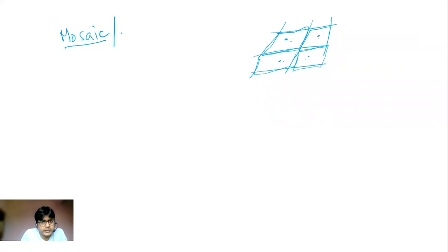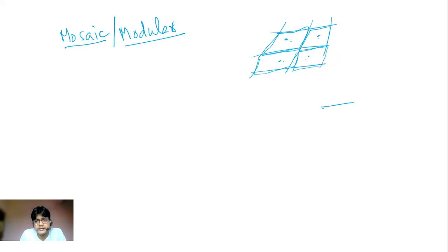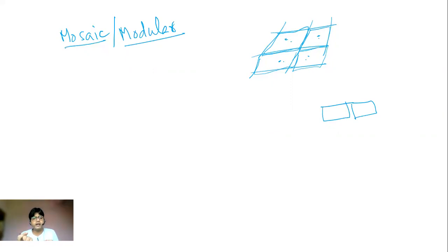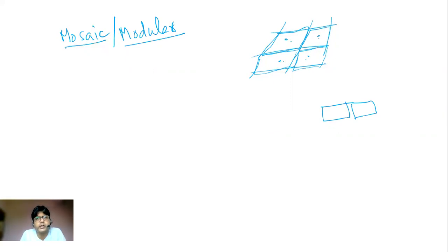Another term for mosaic evolution is modular evolution. Think of a modular kitchen — it has different sections that open and close independently. If I open one section to get a spoon, the other sections don't open. Each section moves independently of the others. Similarly, in mosaic or modular evolution, different biological features develop independently of each other.